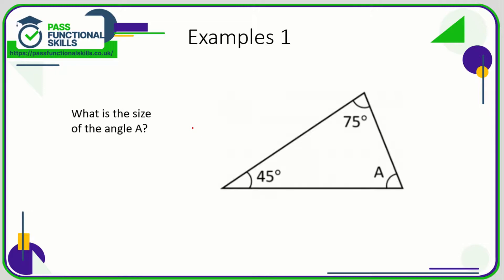Let's look at a few examples. So here we've got a triangle. The key thing is angles in a triangle add up to 180 degrees. So the angles we have so far are 45 and 75. If we add them together, that is 120, and 180 minus 120 is 60. So A equals 60 degrees.